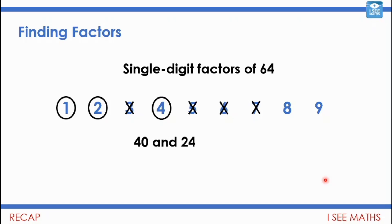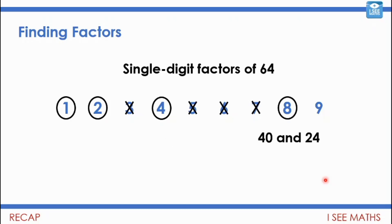Four is a factor of 64. I split 64 into 40 and 24, and four is a factor of both 40 and 24. Eight is also a factor — you might just know that eight times eight is 64. If you didn't, you could split 64 into 40 and 24, and eight is a factor of both. Nine isn't — you might know that seven nines are 63, or you could count up from five nines which is 45, and reach seven nines at 63. So nine is not a factor of 64.